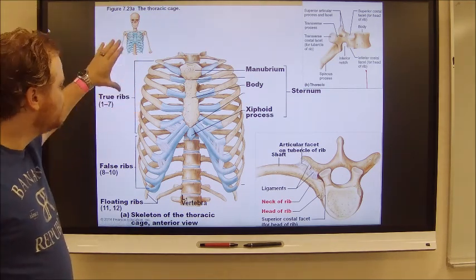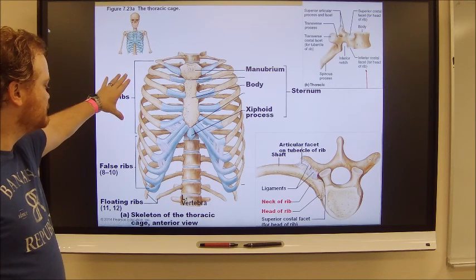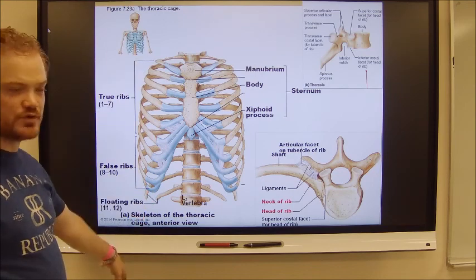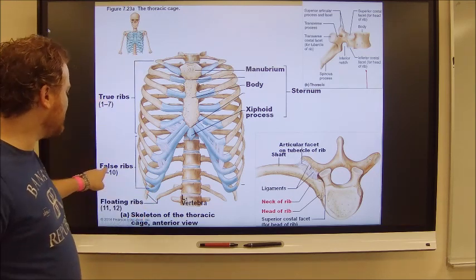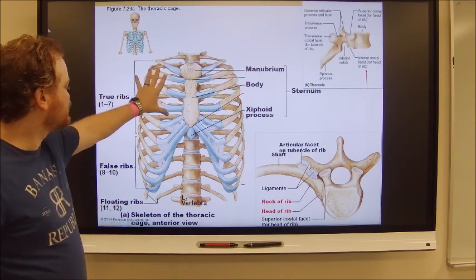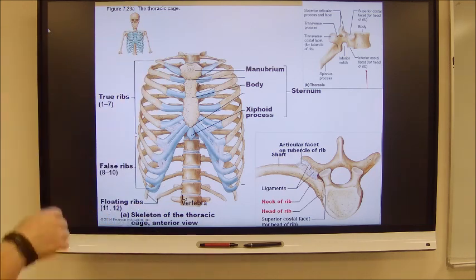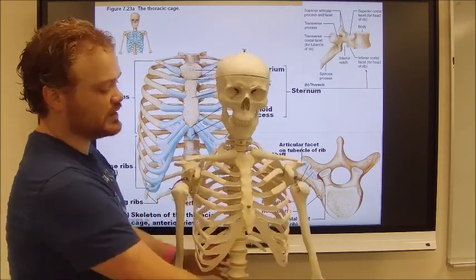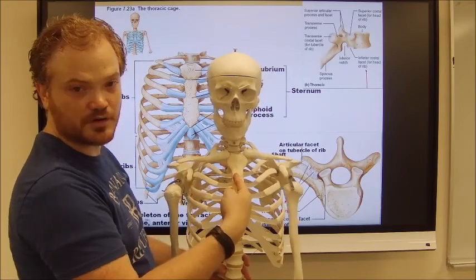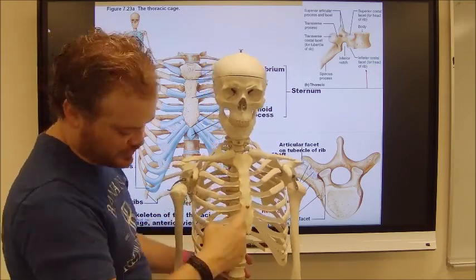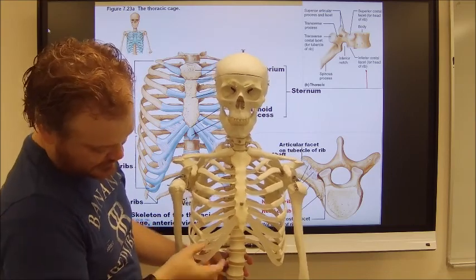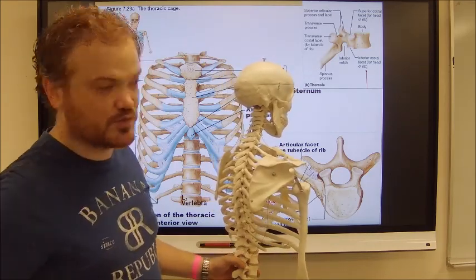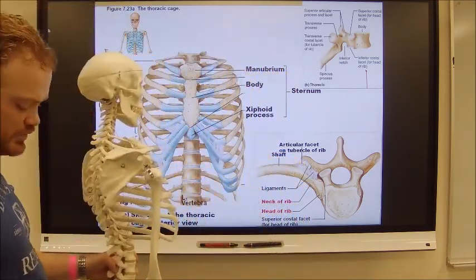The ribs are very important. You have seven true ribs, three false ribs, and two floating ribs — twelve total. True ribs connect straight to the sternum. False ribs connect to each other first and then to the sternum. Floating ribs have no connection to the sternum whatsoever.